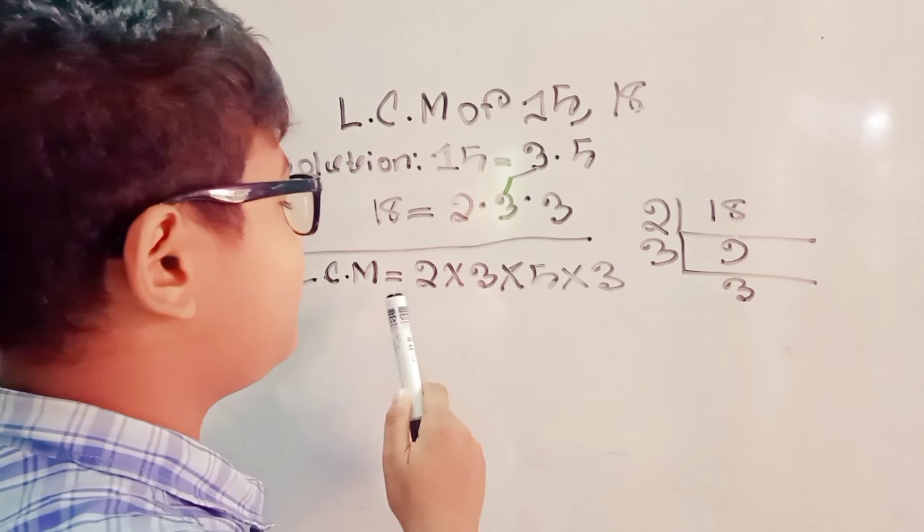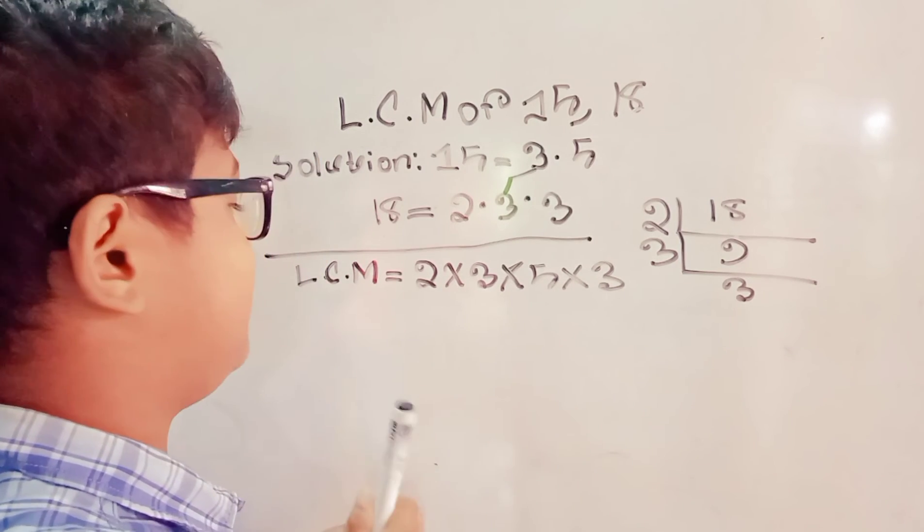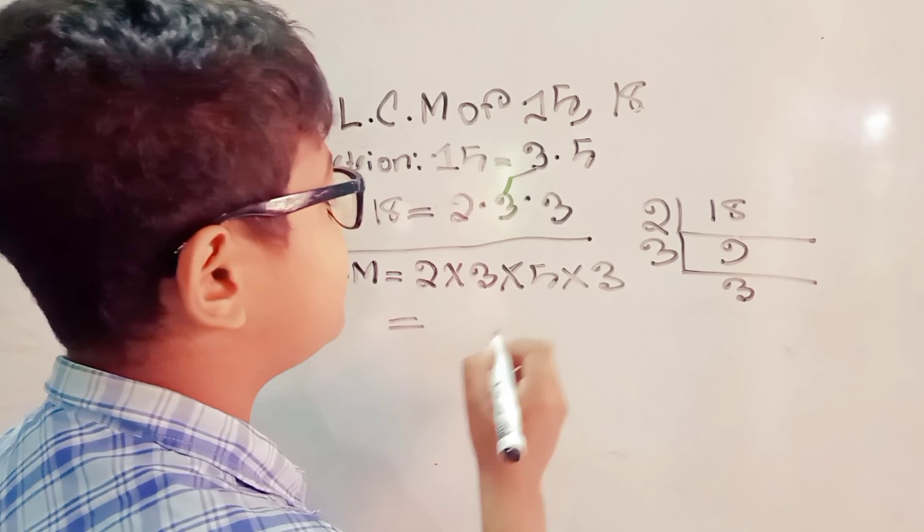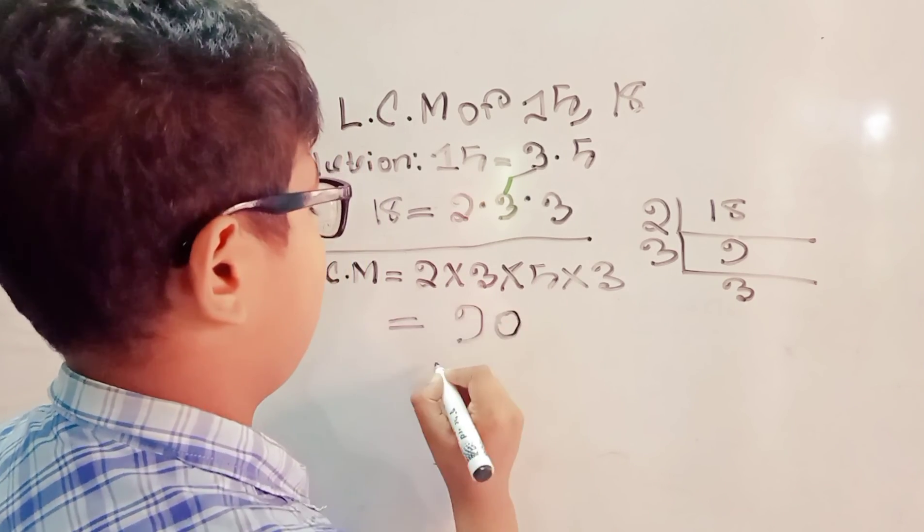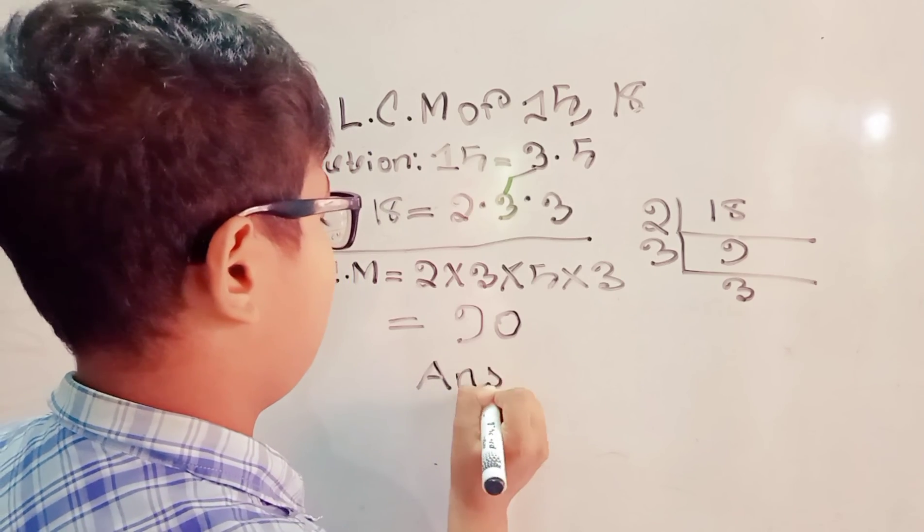Now multiply the factors to get the LCM. 2 times 3 is 6, 6 times 5 is 30, 30 times 3 is 90. Answer: 90.